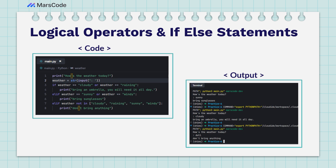Here's a code example. In the first line, we're printing 'How's the weather today?' and then creating a variable called weather with a string input so the user can enter a response. Based on what the user enters, we check if the weather equals 'cloudy' OR 'rainy' — you can see that logical operator OR there — and if so, it prints: bring an umbrella, you will need it all day.